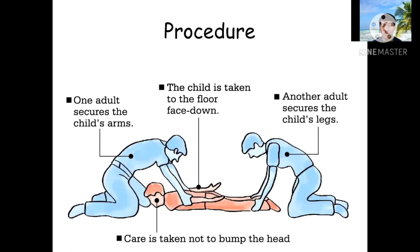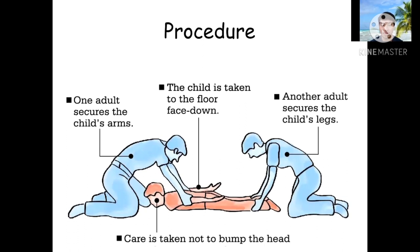If the child is verbal, he will say 'okay, I'm good, I'm ready to behave, I'm not going to do that again.' Ask the child to confirm their promise: 'Are you going to promise that you are not going to do that again?' If he says yes, that is the time he will be released. For those who are unable to talk, maintain the position until he is really calm.